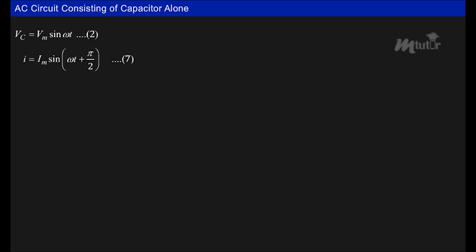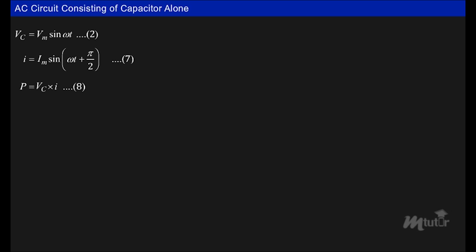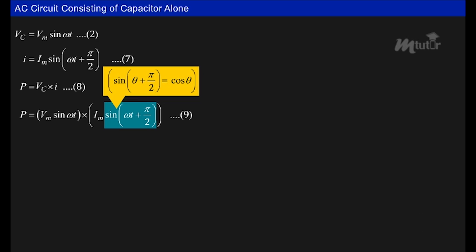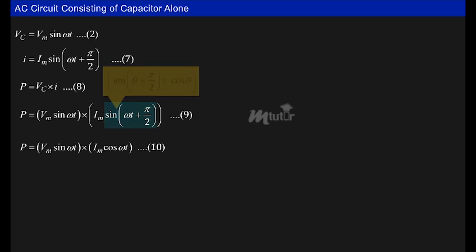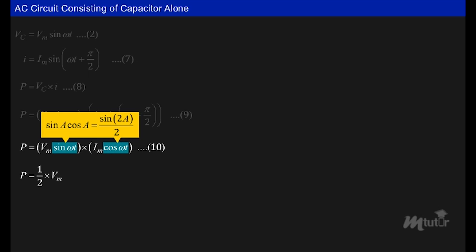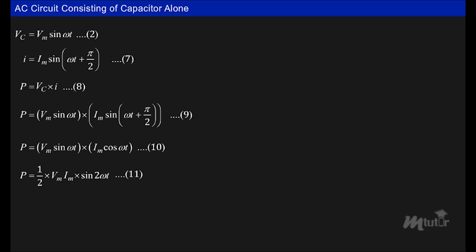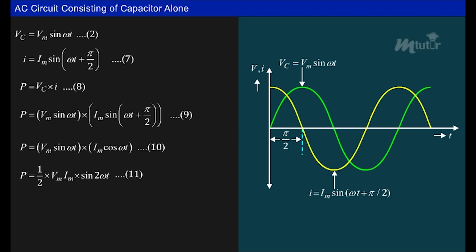Based on the current and voltage expressions, let us derive an expression for power consumed by a pure capacitor. The instantaneous power p = Vc · i. Substituting the voltage and current expressions, we get p = Vm sin ωt · Im sin(ωt + 90°), which simplifies to p = Vm sin ωt · Im cos ωt, and can be rewritten as p = (1/2)·Vm·Im · sin 2ωt, giving the instantaneous power expression, which can be plotted as shown.